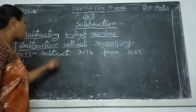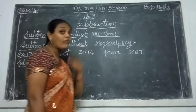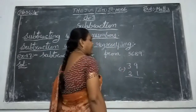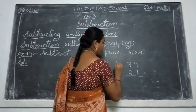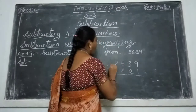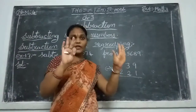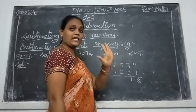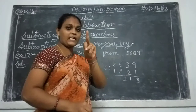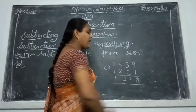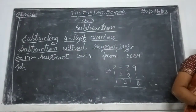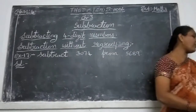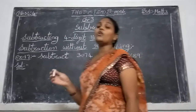Okay. Now see here — subtraction without regrouping. That means any four-digit number will be subtracted. Already you did addition with regrouping and without regrouping. That same way, you do subtractions also — without regrouping.